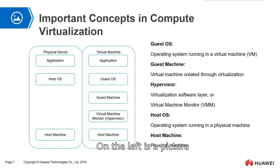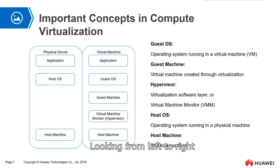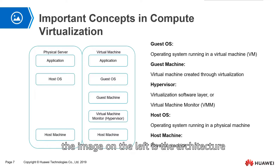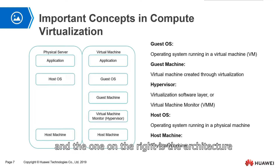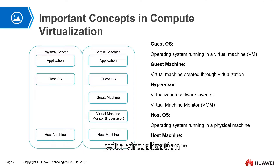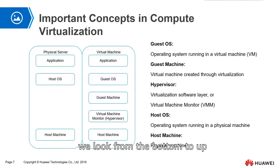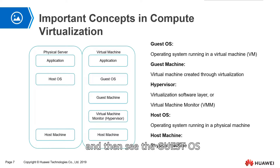On the left is the picture and on the right is the text. Looking from left to right, the image on the left is the architecture without virtualization, and the one on the right is the architecture with virtualization. The text on the right we will look at from the bottom up — look at the host machine first, and then see the guest OS above.